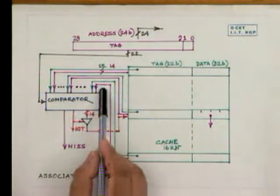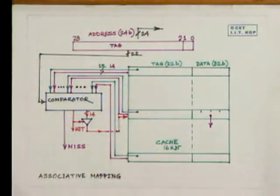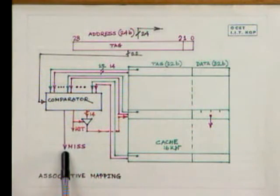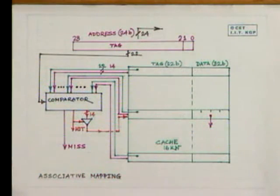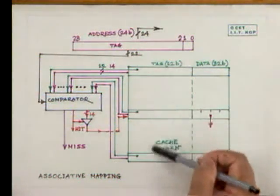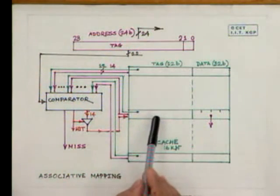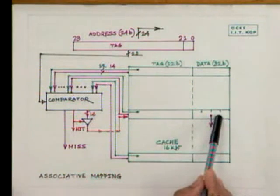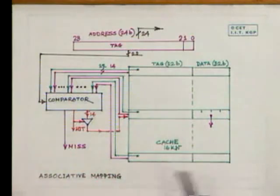Since this comparison has to be done in parallel to make it fast, the total cost of associative mapping is pretty high, but the disadvantage of direct mapping is eliminated. If it is a miss instead of a hit, the action required is to go to the main memory to fetch the content of that word. That word is fetched, that block's address is taken, one line from the cache is removed, and the newly fetched data and address are loaded into that line. The newly fetched data is also sent to the CPU.